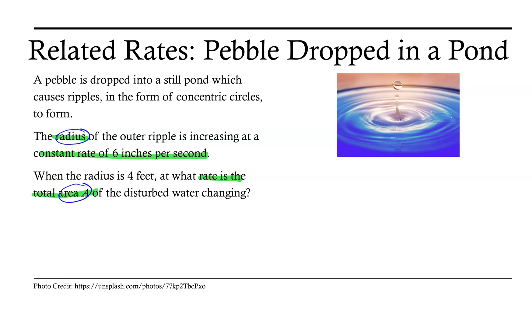We know that the area of a circle is equal to pi r squared.